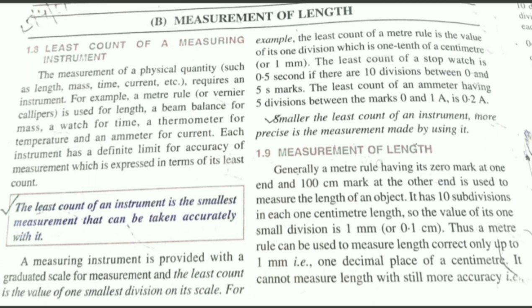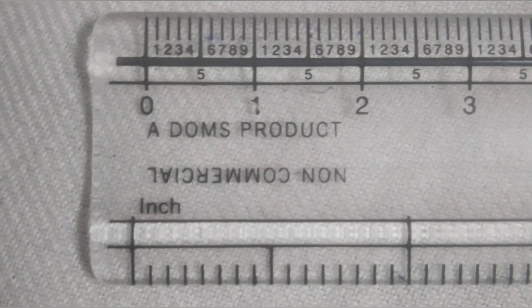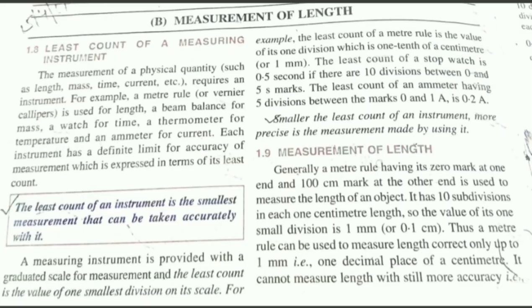For example, we have this meter rule and values are given: 1, 2, 3, and then there are smaller divisions as well. That smaller division is the least count of an instrument. Therefore the least count of this meter rule — the value of one division — is one tenth of a centimeter, or we could say one millimeter.